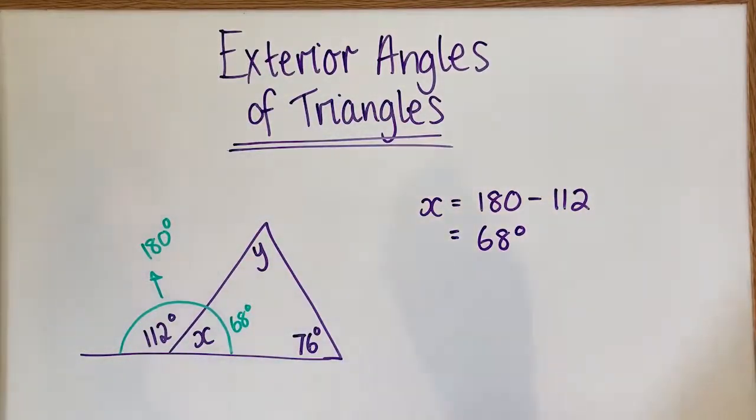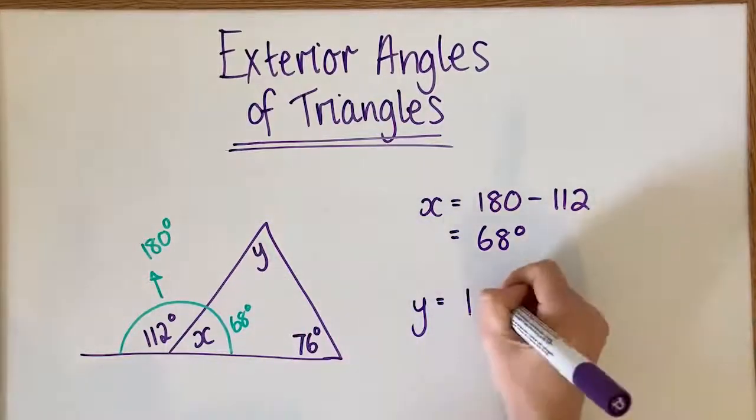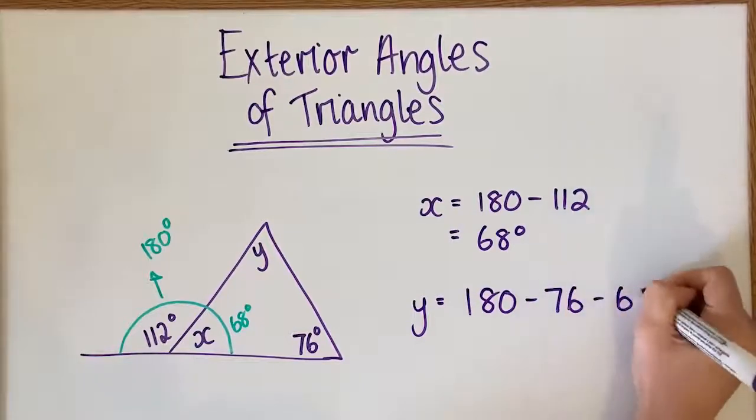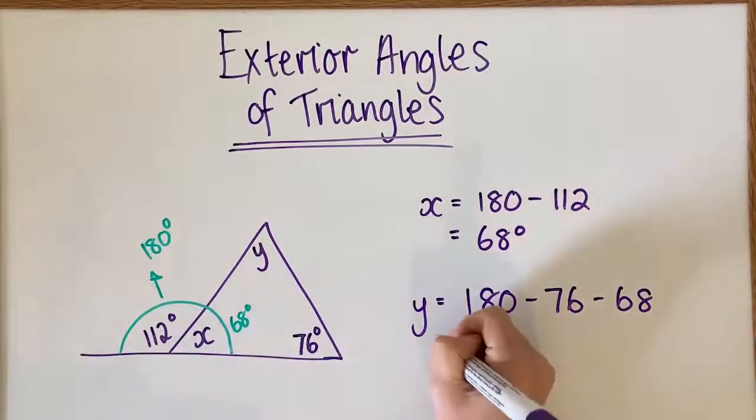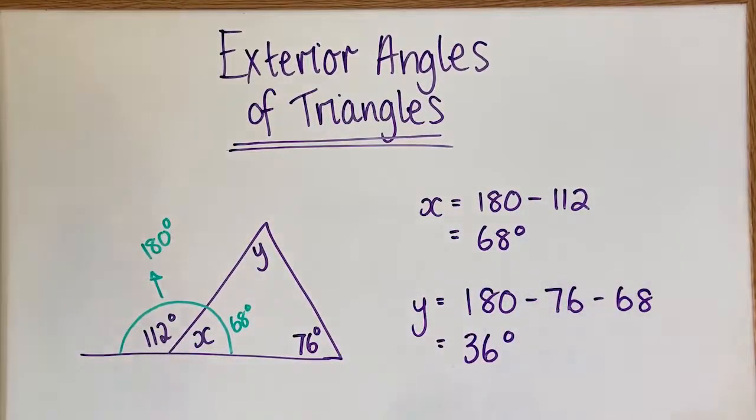Now I can use my knowledge of X and the given angle to find Y. We learned before that there's 180 degrees in every triangle, so I'm going to take away this and take away this to find out what Y is. That's going to leave me with 36 degrees.